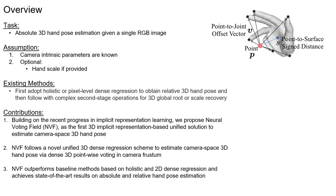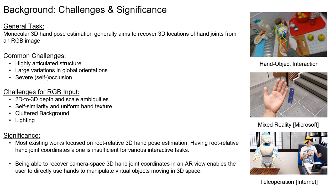Through direct dense modeling in the 3D domain, inspired by pixel-aligned implicit functions for 3D detailed reconstruction, our proposed Neural Voting Field (NVF) fully models 3D dense local evidence and hand global geometry, helping to alleviate common 2D to 3D ambiguities. NVF outperforms baseline methods based on holistic and 2D dense regression and achieves state-of-the-art results on absolute and relative hand pose estimation.